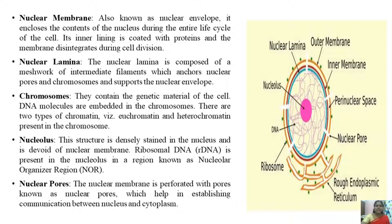Chromosomes contain the genetic material of the cell, and DNA molecules are embedded in the chromosome. There are two types of chromatin — euchromatin and heterochromatin — present in the chromosome.